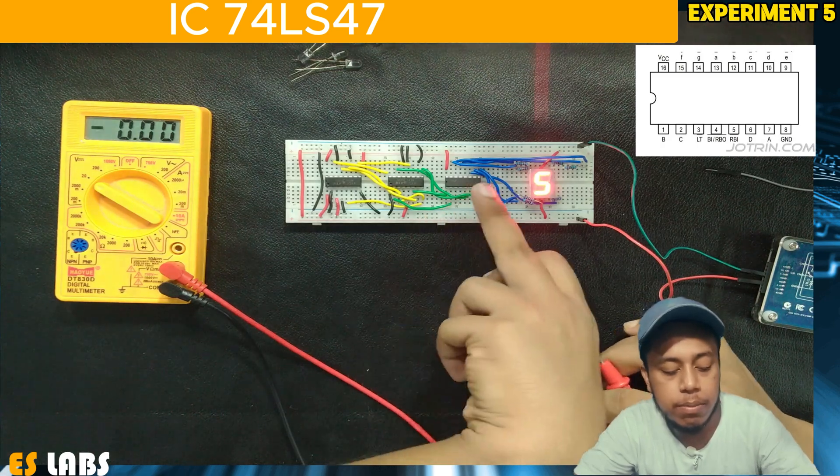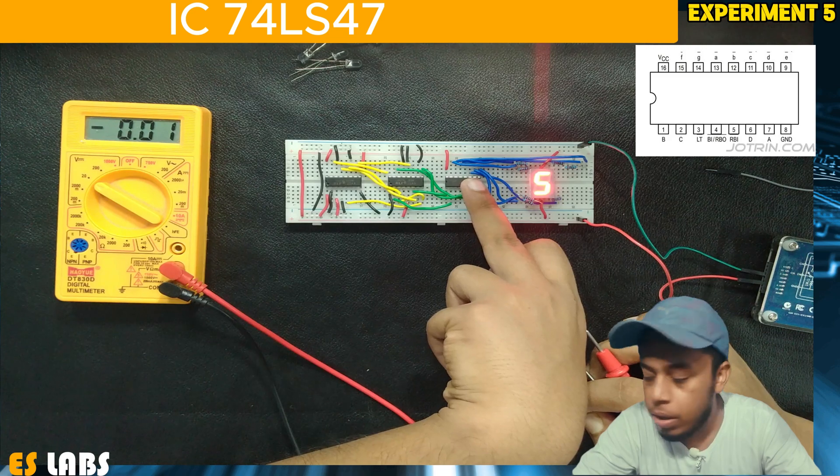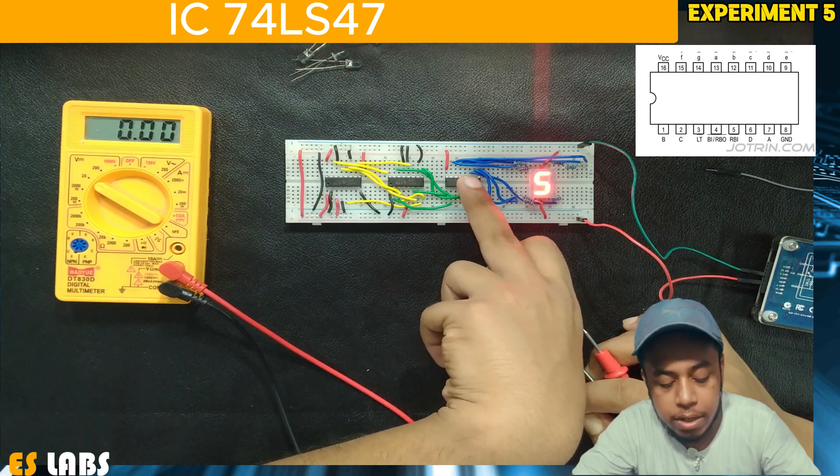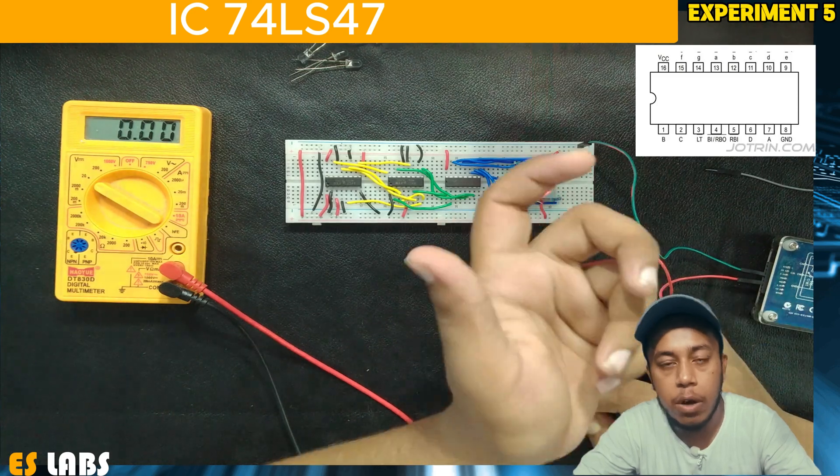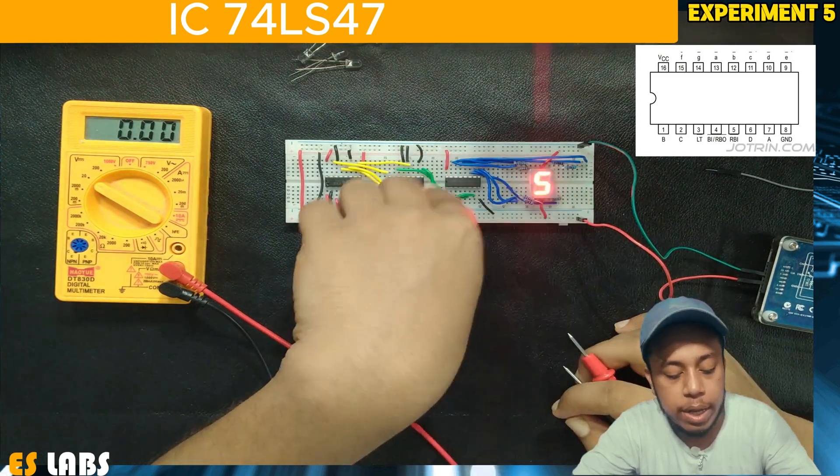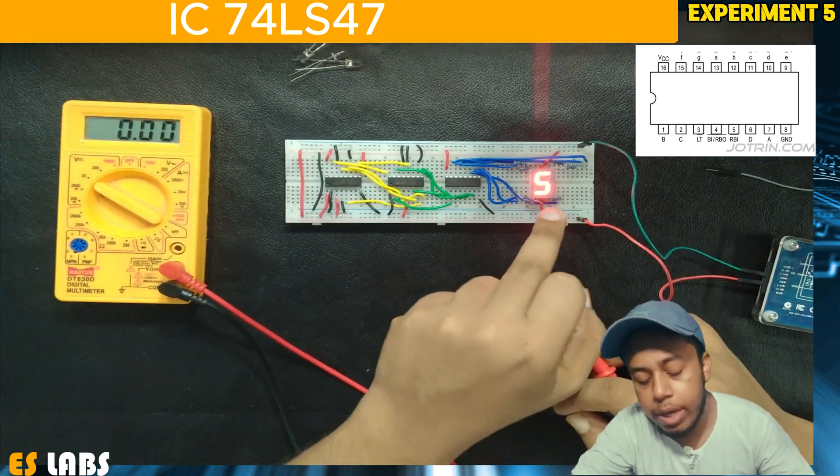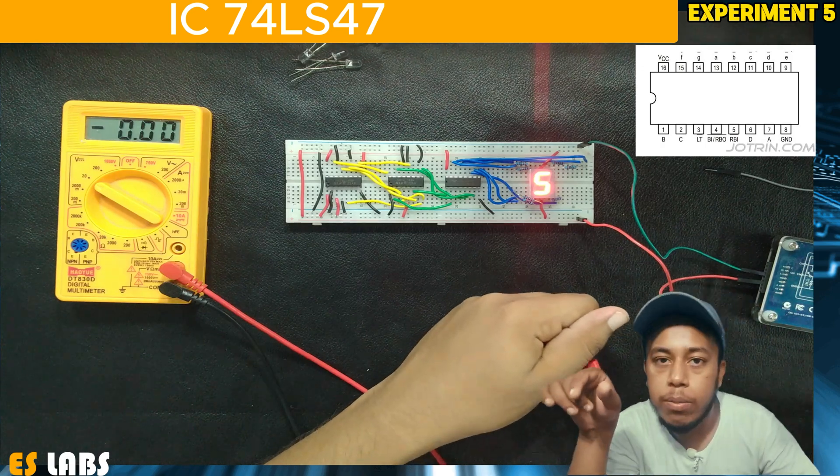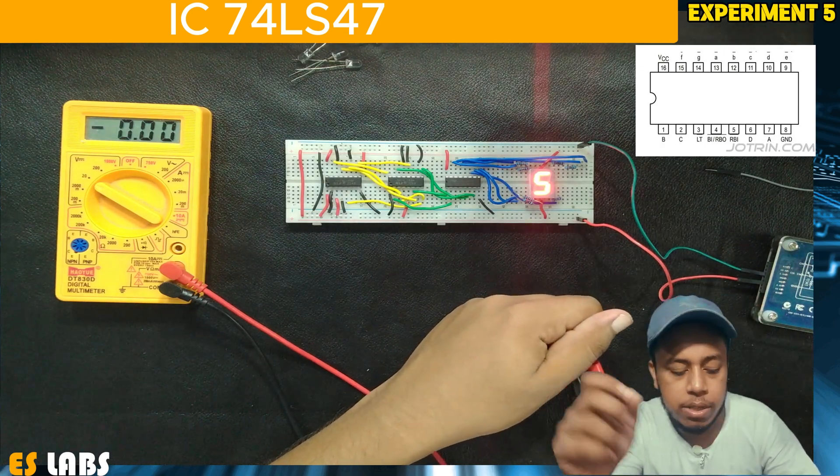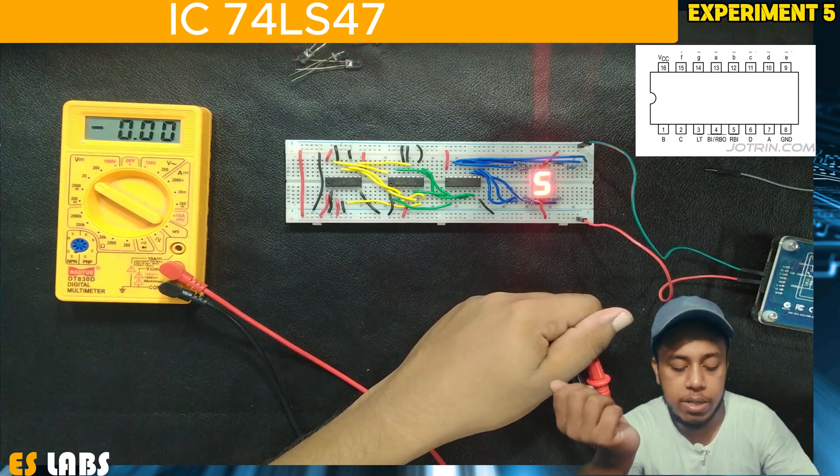These pins A to G are output pins selected so that the right LED glows and displays the output. A from the 74LS47 is connected to A of the 7 segment display through a 220 ohm current limiting resistor. Similarly B is connected to B through a 220 ohm resistor.